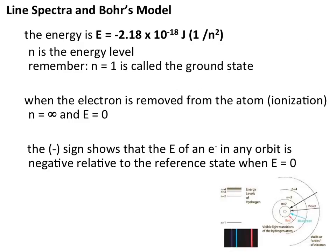Now that we've looked at Bohr's quantum model for the hydrogen atom, we'll look at some of the mathematical expressions associated with this Bohr model. This equation expresses the energetic value of a specific state or specific orbit in a hydrogen atom, where n represents that energy level or orbit. This equation allows us to look at the specific energy values or energy levels available to an electron in a hydrogen atom.